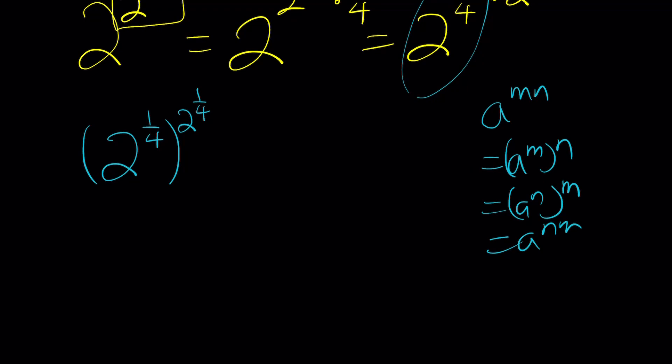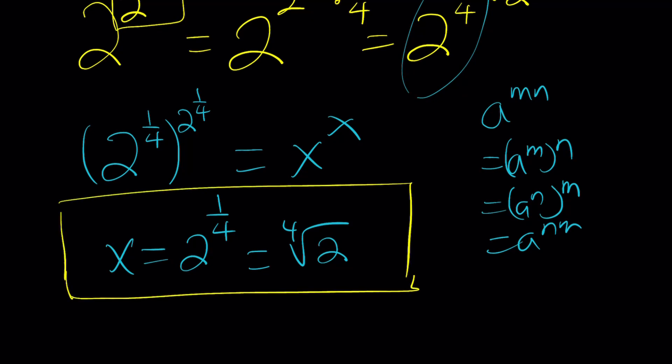Now we got something super nice because this is x to the power x. So we got x to the power x equals this and from here I can automatically say that x is supposed to be 2 to the power 1 fourth which is the fourth root of 2. Wait, isn't there another solution? No, remember when we looked at the graph we realized there should be only one solution and this is it.